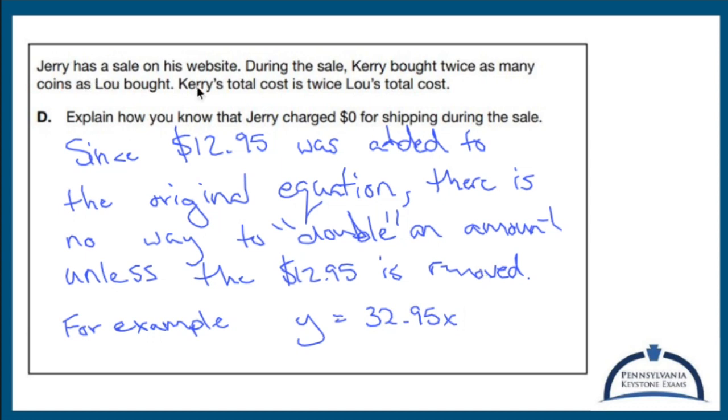So since it says that there's a sale, we know that the equation is going to be altered. And the way that the equation is altered is that the $12.95 is removed.